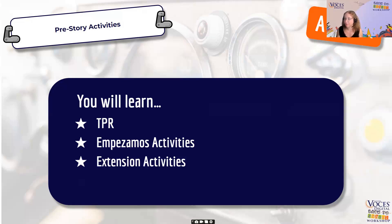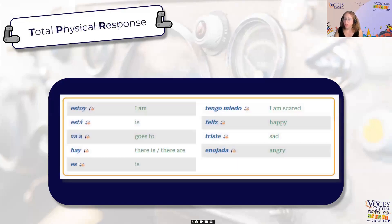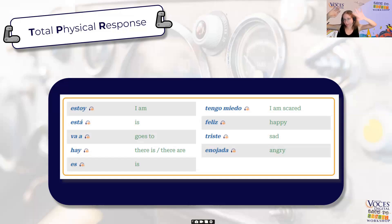We're going to talk about total physical response, Empezamos activities — which are activities you do before you get into the story — and then extension activities. Total physical response is just the act of creating a motion to go with a word, and the reason we do that is because in your head you have neurons and axons that send signals, and that's how you process all of the information.